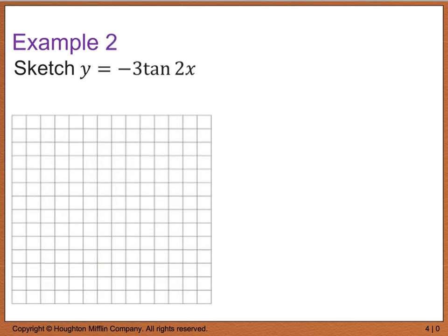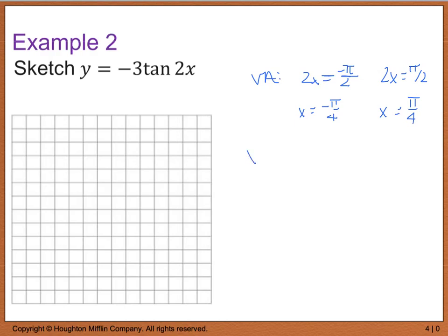The next example: sketch y = -3 * tan(2x). Find vertical asymptotes by setting 2x = -pi/2, giving x = -pi/4, and 2x = pi/2, giving x = pi/4. X-intercepts are found from the midpoint of -pi/4 to pi/4, which is x = 0.